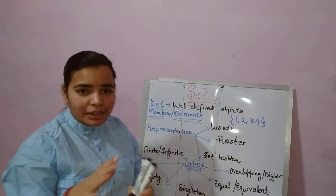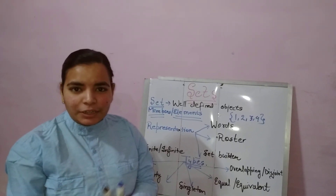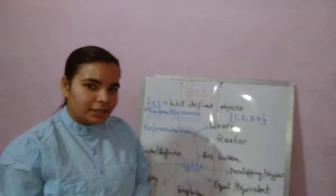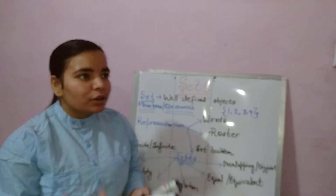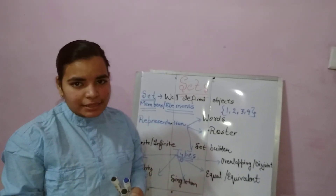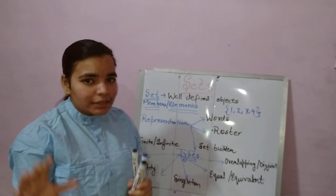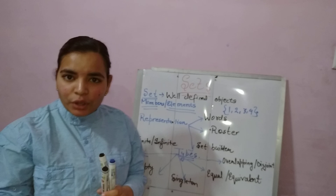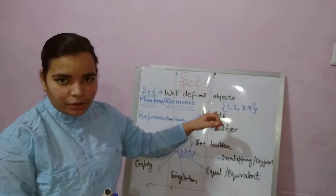First of all, what do we mean by a set? A set can be defined as a well-defined collection of objects. It could be anything. Suppose a set of natural numbers, a set of whole numbers — you can even decide the limits, like a set of natural numbers between 1 and 4. So basically, it is a well-defined collection of objects as it is written over here also.